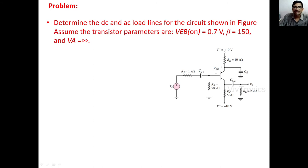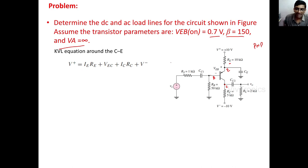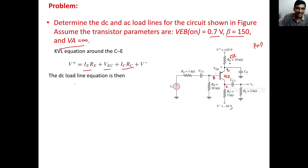Now we solve a problem: determine the DC and AC load lines for the given circuit. The transistor parameters are: Vbe(on) = 0.7 V, β = 150, and early voltage Va = ∞. The circuit uses a PNP type transistor, so the emitter terminal is on the upper side and the collector on the lower side, with the base as the input terminal.